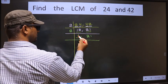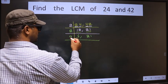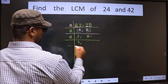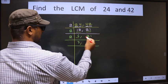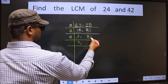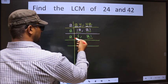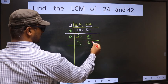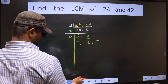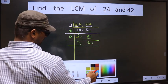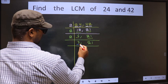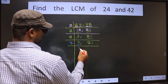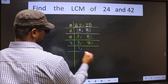Now here we have 6 — 6 divided by 2 is 3, giving 6. The other number 21 is not divisible by 2, so we write down 21 as it is. Now here we have 3 — 3 is a prime number, so 3 times 1 is 3.